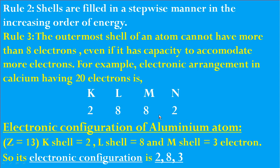Now, how to write the electronic configuration of aluminium? Aluminium has atomic number 13. The K shell gets 2 electrons, the L shell gets 8 electrons, and the remaining 3 electrons go to the M shell. So the electronic configuration of aluminium is 2, 8, 3.